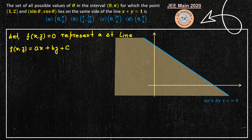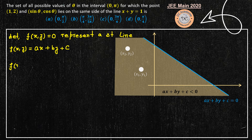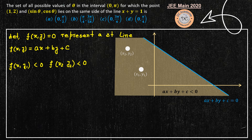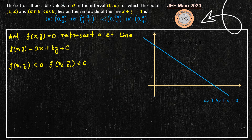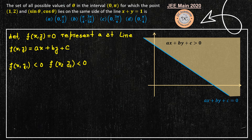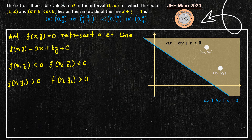Consider the shaded region on one side of the line where ax plus by plus c is less than 0. If points (x1, y1) and (x2, y2) both lie in that region, then f(x1, y1) is less than 0 and f(x2, y2) is also less than 0. Similarly, if both points lie on the other side of the line, then f(x1, y1) is greater than 0 and f(x2, y2) is also greater than 0.